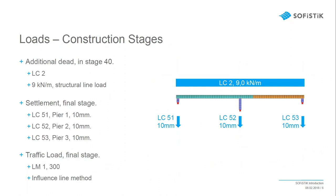For loads, additional dead load is added at stage 40, defined in SOFI+ as load case 2 with 9.0 kN/m as a structural line load. For design purposes, a settlement of 10 mm is defined for piers P01, P02, and P03 in the final stage, stored in load cases 51, 52, and 53. Traffic loads use Load Model 1, type 300, calculated via the influence lines method.